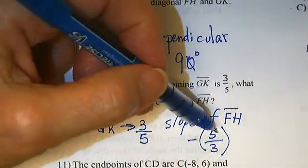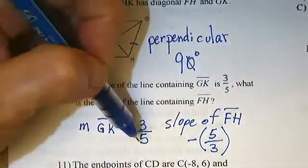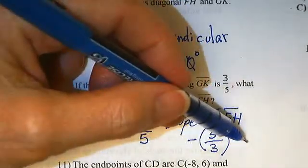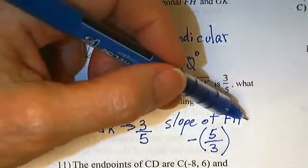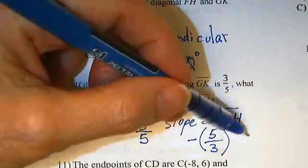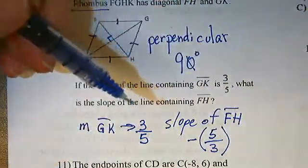3 times negative 5, negative 15. 5 times 3, positive 15. Negative 15 over positive 15 multiplies together to negative 1.